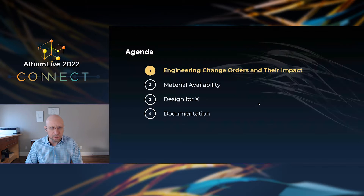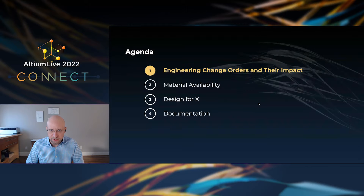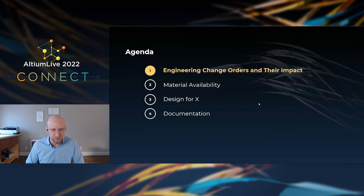Our agenda today is that we're going to talk about engineering change orders and their impact on your production. Then we're going to dive into three key areas that drive change orders at the contract manufacturer: material availability, design for manufacturability, assembly and test, and documentation.